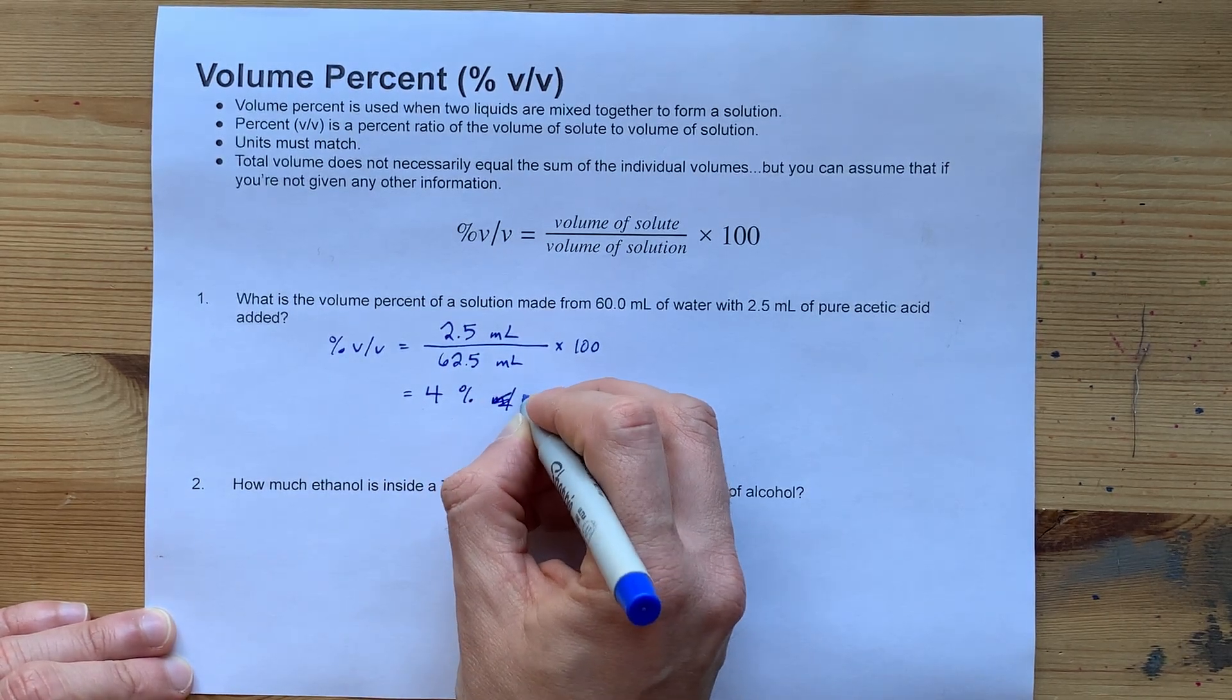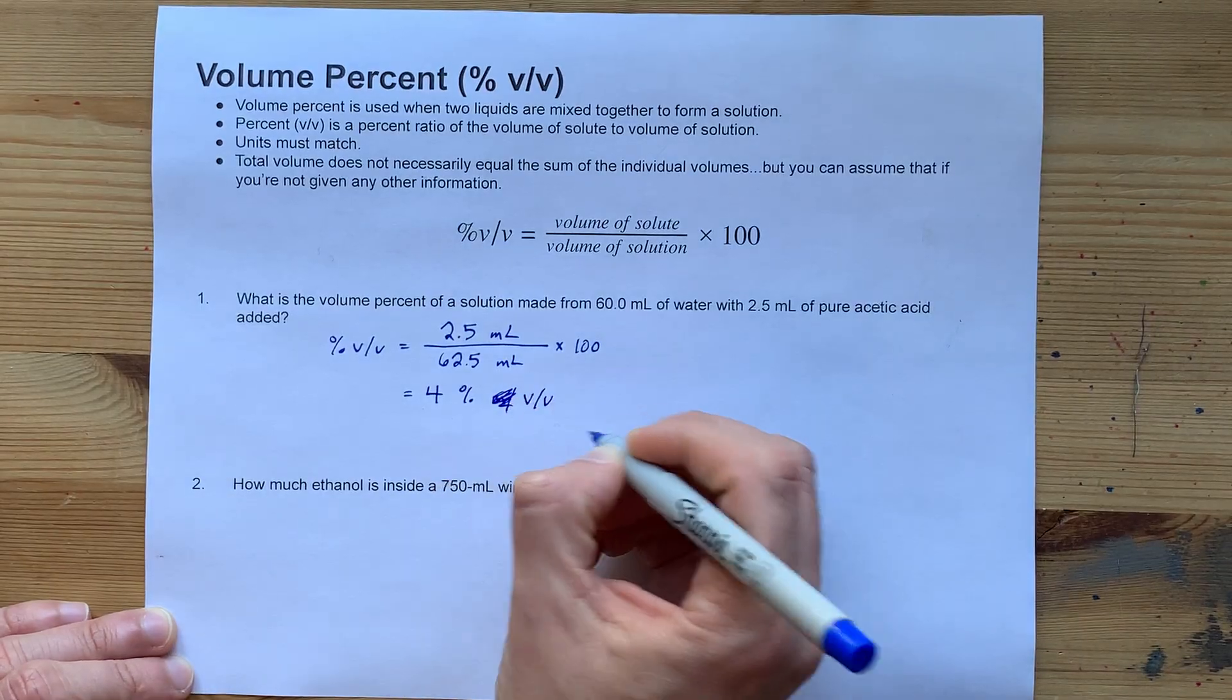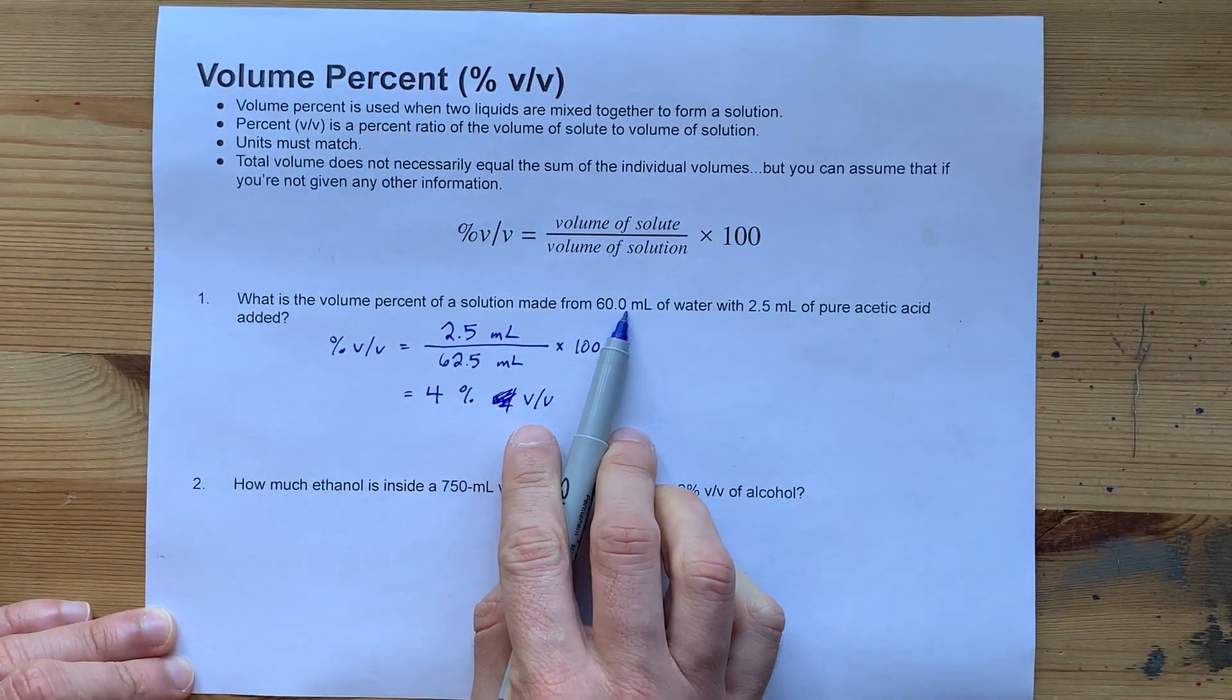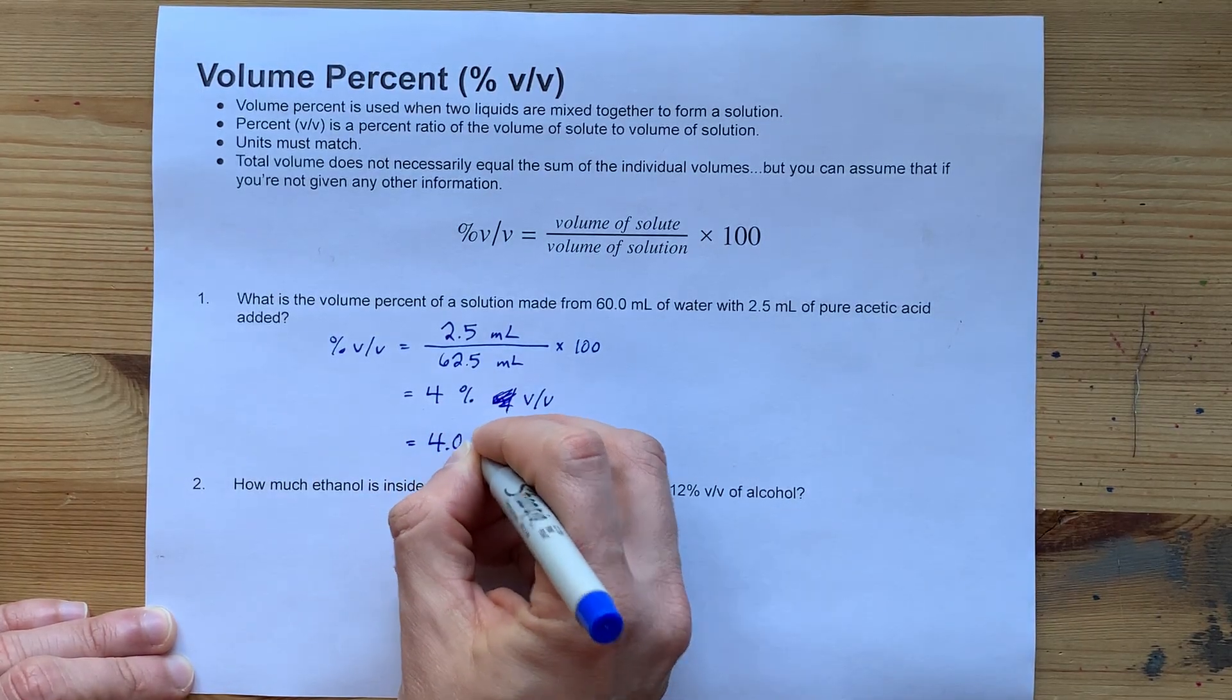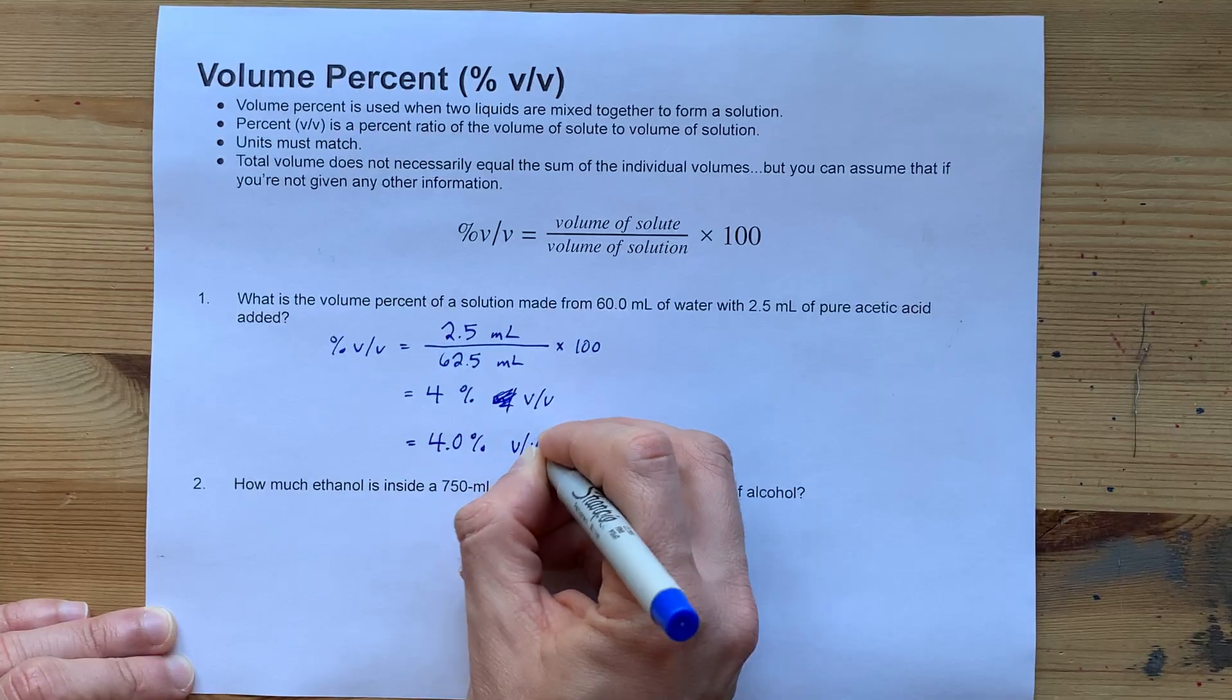Now, we will write percent V over V for volume percent. But also, this is three significant figures. That's two. So, the official answer here is 4.0 percent V over V.